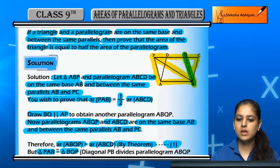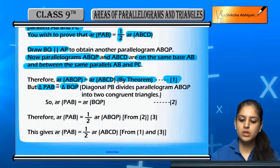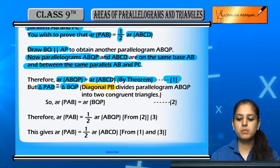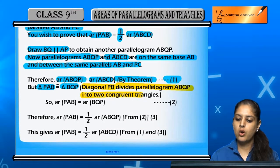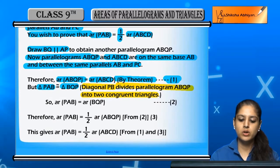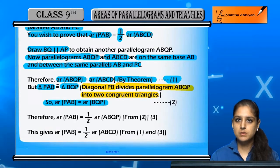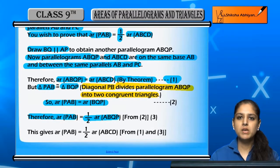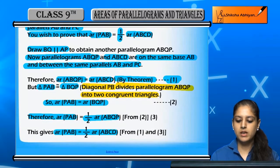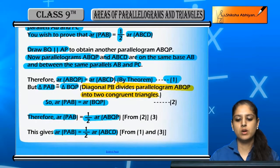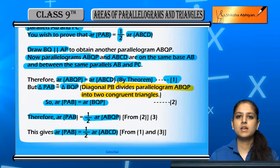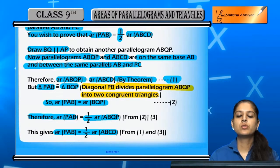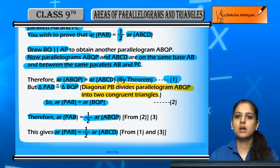Triangles ABP and BQP are congruent because diagonal PB of parallelogram ABQP divides it equally. Since these two triangles are congruent, their areas are equal, so the area of triangle PAB is half the area of ABQP. Since ABQP equals ABCD, the area of triangle PAB is half the area of parallelogram ABCD. This completes the proof.